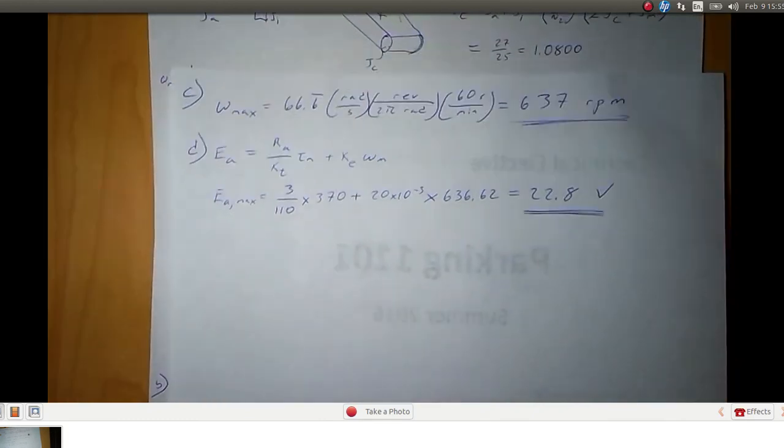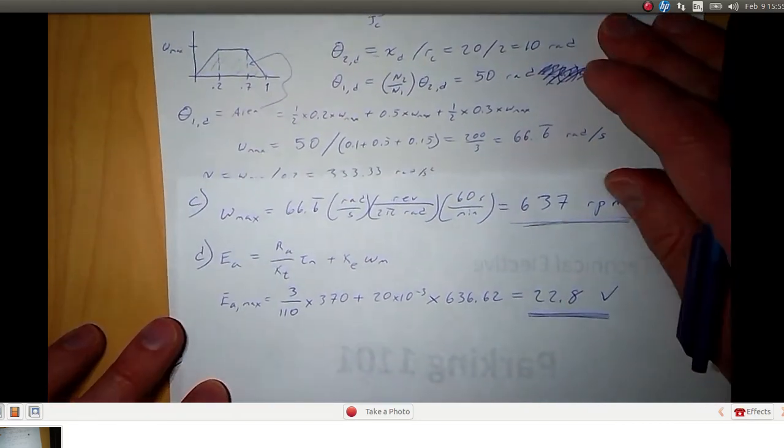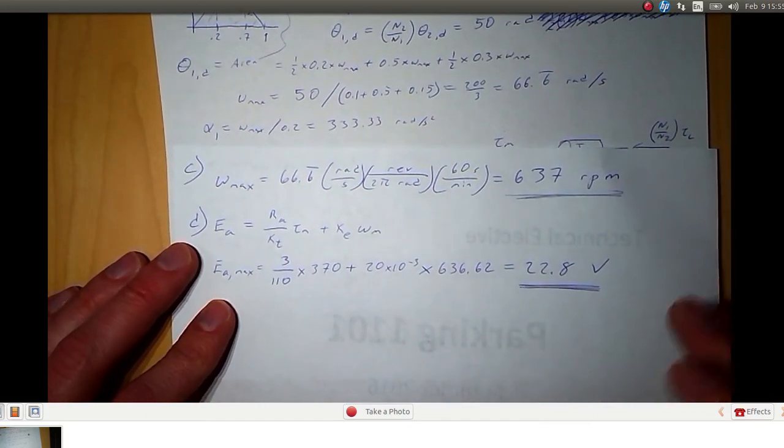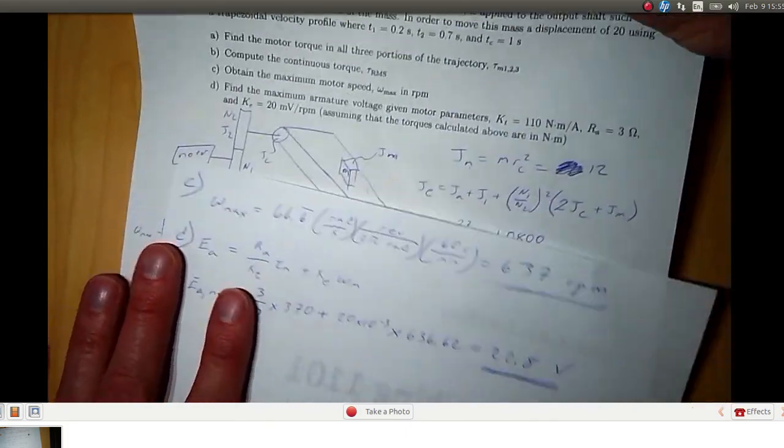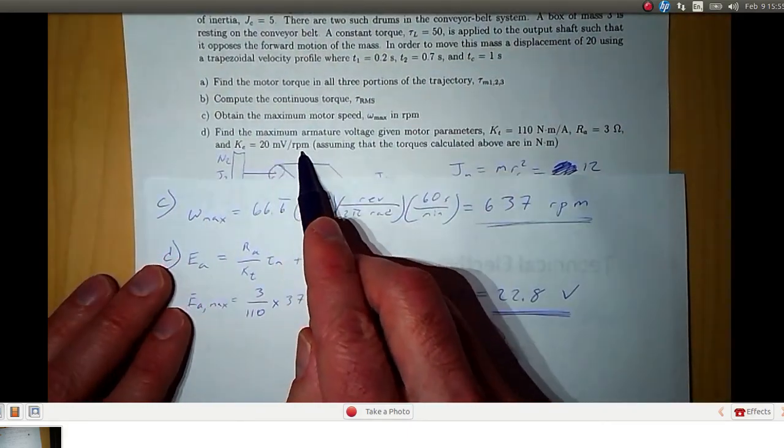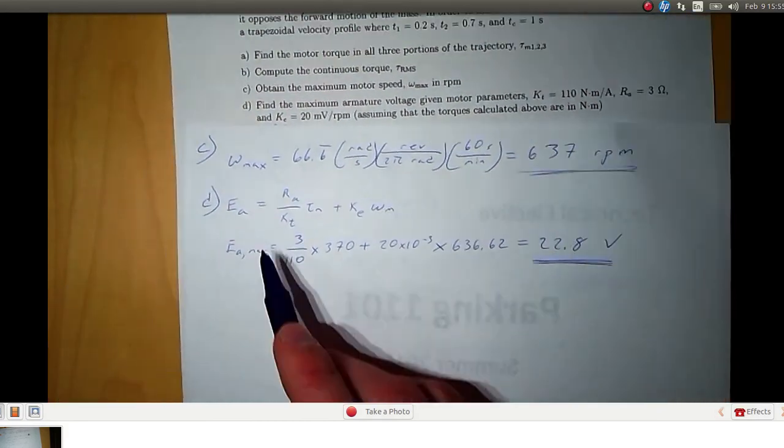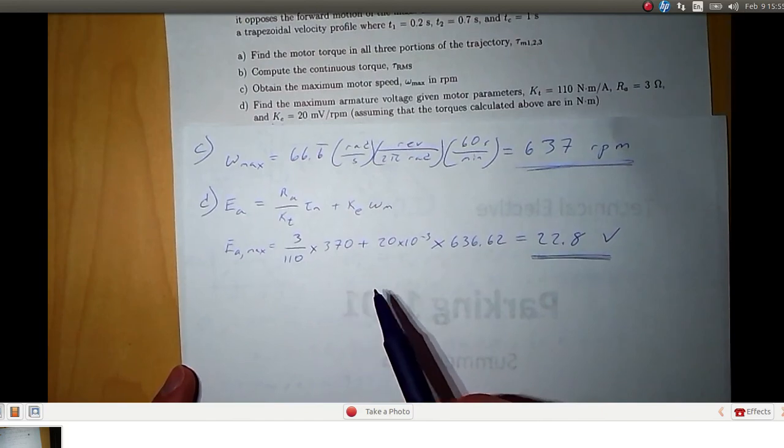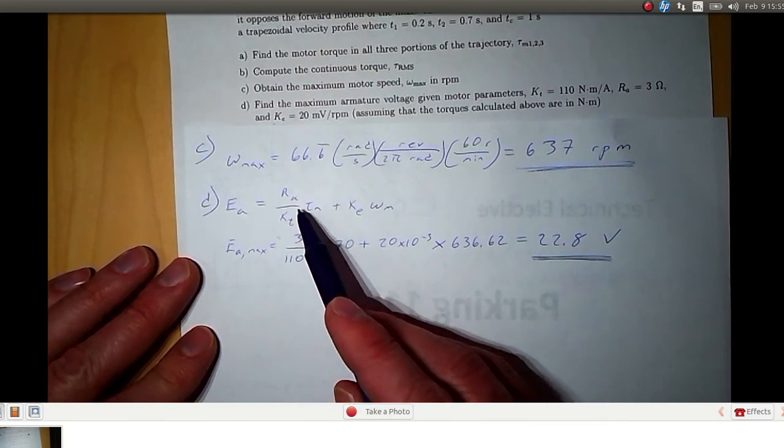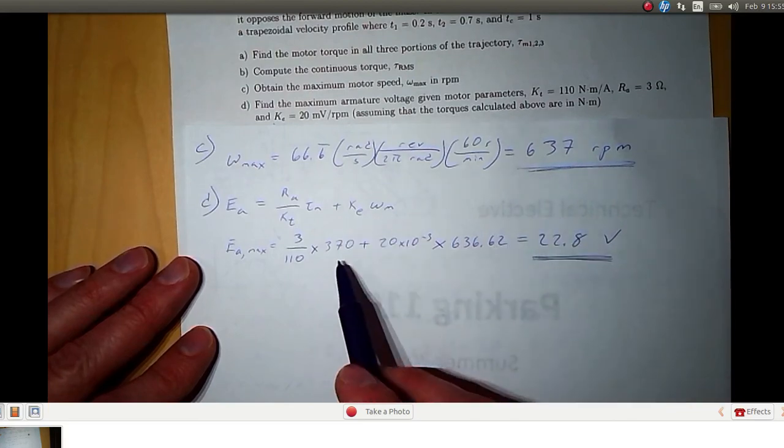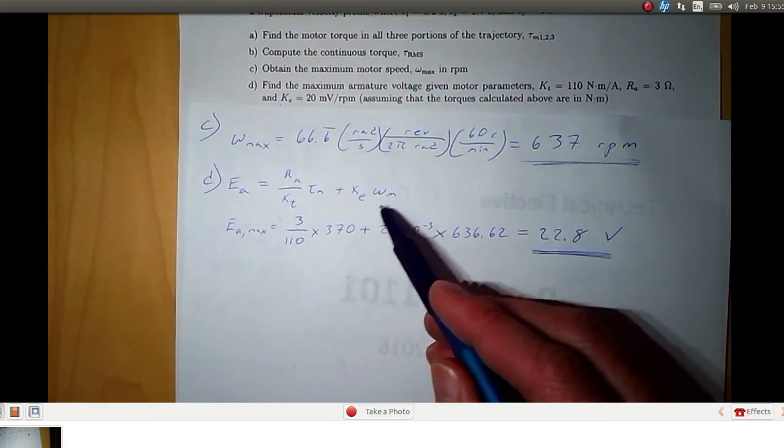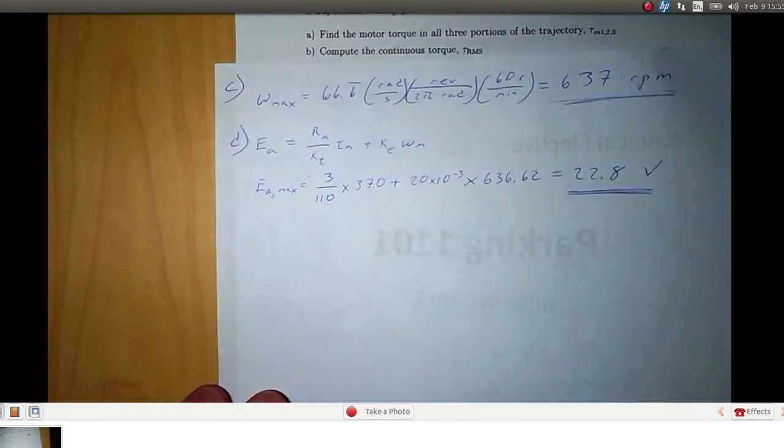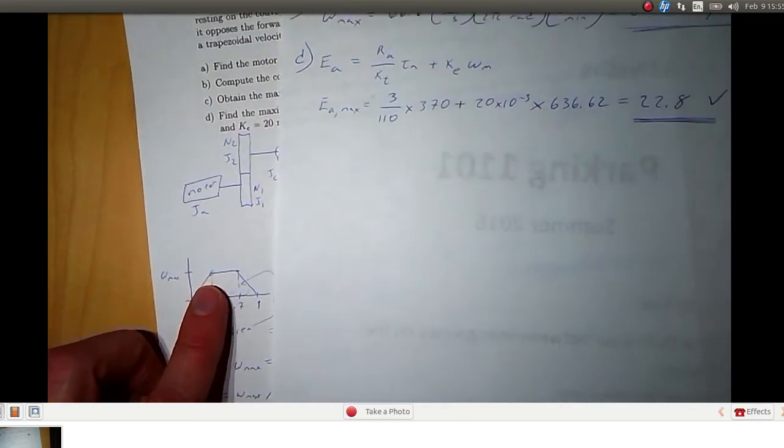We're asked to compute the maximum velocity, motor speed, in RPM. So that's just a simple conversion from 666 radians per second to RPM, we get 637 RPM. And the reason we want that is because we are given the voltage constant K_E in millivolts per RPM. So here's an expression for the armature voltage, E_A, the electromotive potential at the armature. At steady state it's equal to R_A over K_T times the motor torque plus K_E times the motor speed. So we just substitute in the maximum values here for torque and speed and this occurs at this point here. It's the highest speed and the highest torque and we get 22.8 volts will be required by the motor at that point.